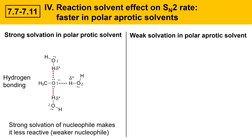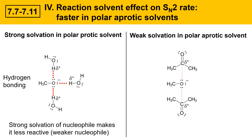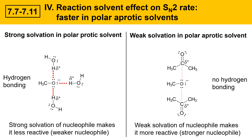Let's compare and contrast that with the weak solvation present in a polar aprotic solvent. Here's the same methoxide nucleophile again, and in the presence of a polar aprotic solvent like acetone, acetone will interact with the nucleophile via its partially positive charged carbon, forming intermolecular force type interactions — dipole-dipole interactions — but those are much weaker than hydrogen bonds, and therefore the nucleophile here is a lot less strongly solvated. It's much easier for it to shake off its solvation shell and act as a nucleophile. So there's no hydrogen bonding in this particular example, and that means this weak solvation of the nucleophile makes it more reactive — it's a stronger nucleophile as a result, and that strongly influences the rate of an SN2 substitution reaction.